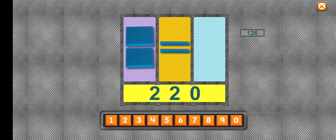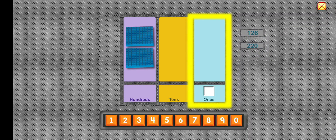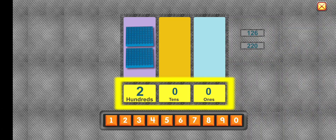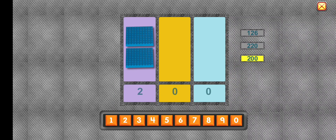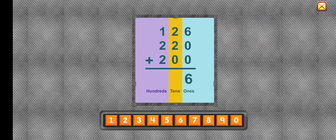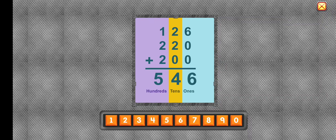Two hundred twenty. Six in the ones place, four in the tens place, five in the hundreds place. Five hundred forty-six. Good job! Now we can build a robot.